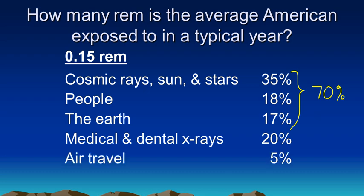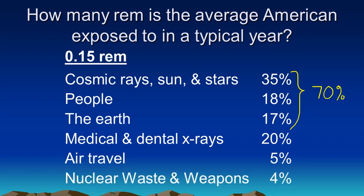Air travel. It's about 5%. That's usually explained because the airplane travels at a higher level of the atmosphere than what most of us are used to. So, we're closer to the cosmic rays and the sun's rays when you're traveling in an airplane. Here's another percentage. Nuclear waste and weapons. About 4%.